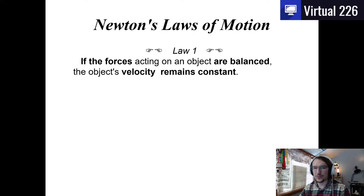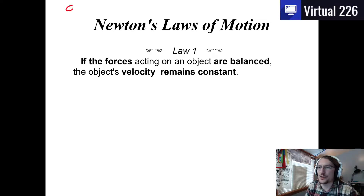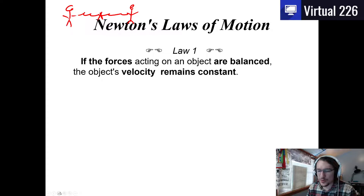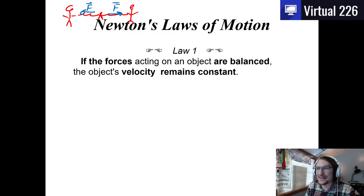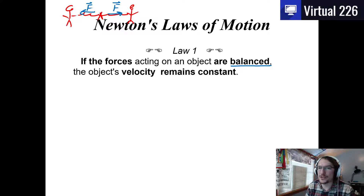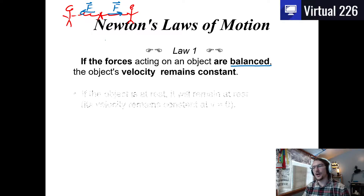Think about tug-of-war: if you're perfectly matched against your opponent, both of you are pulling on the rope with equal forces in opposite directions. These forces cancel each other out, so the forces are balanced. That means velocity remains constant — and since nothing was moving to begin with, the velocity remains zero.